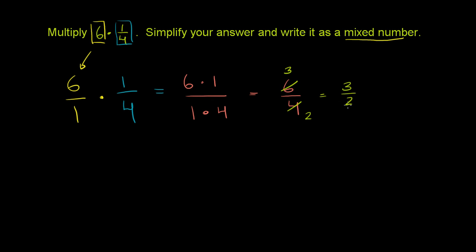It's still written as an improper fraction. To write it as a mixed number, you divide the denominator into the numerator. So divide 2 into 3. 2 goes into 3 one time. 1 times 2 is 2. Subtract, and you have a remainder of 1. So this becomes 1 whole and 1/2 left over.